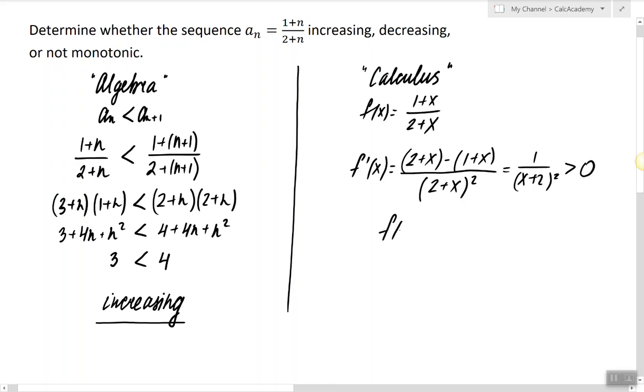So when the derivative is always positive, that means f of x is always increasing. And if f of x is always increasing, the sequence which lives on f of x is also increasing. So we showed in two different ways that the given sequence is increasing.